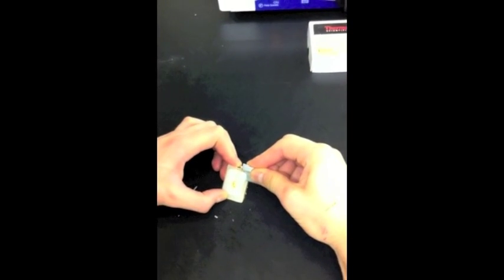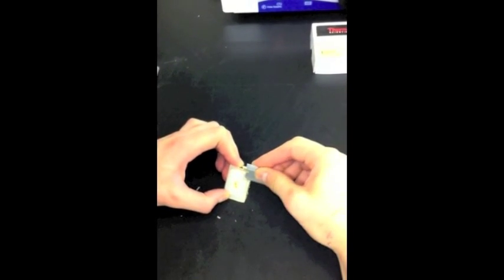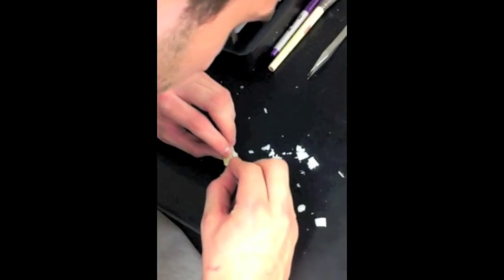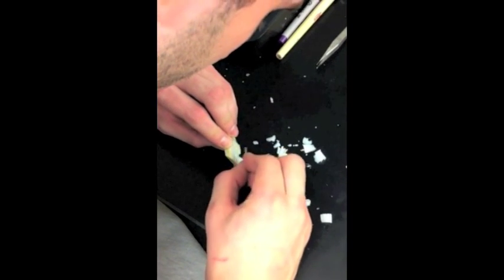Remove the excess paraffin around your sample using both horizontal and vertical cuts. Be careful not to crack the paraffin off of the cartridge.